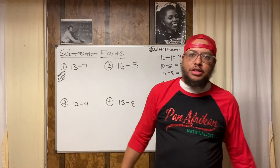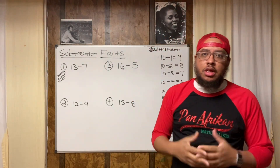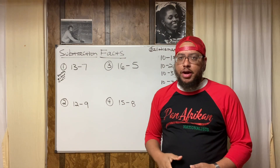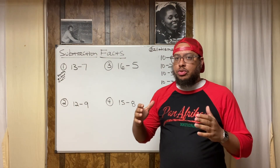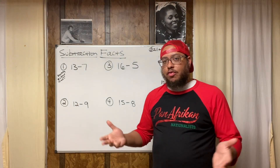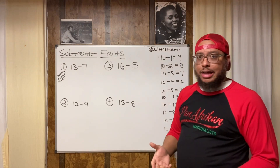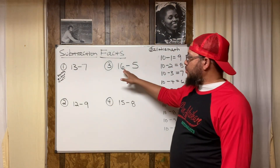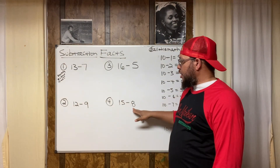Welcome back to All This Math. This is Professor Parker, and for today's lesson we're going to talk about some subtraction facts and how to use number bonds to do some subtraction problems. We have four examples: 13 minus 7, 12 minus 9, 16 minus 5, and 15 minus 8.